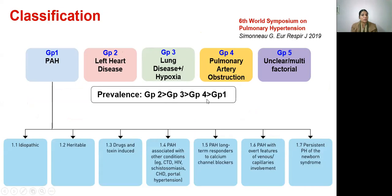There have been changes in the subgroups. Group 1 pulmonary arterial hypertension now consists of seven subgroups: idiopathic, heritable, drugs and toxin induced, associated PAH consisting of connective tissue disease, HIV, schistosomiasis, congenital heart disease, and portal hypertension. Subgroup 1.5 is PAH long-term responders to calcium channel blockers. Subgroup 1.6, PAH with overt features of venous or capillary involvement, is now classified under pulmonary arterial hypertension due to the common obstructive proliferative pathology.